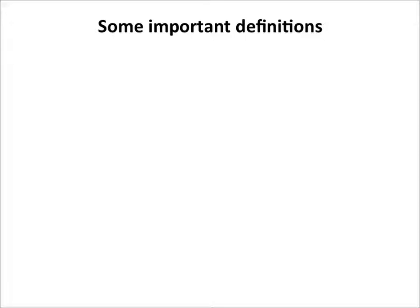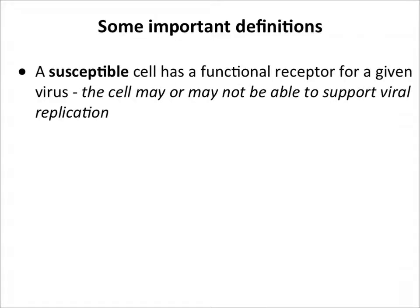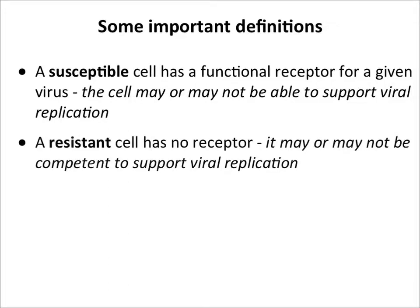There are some important definitions I'll be using throughout. A susceptible cell has a very specific meaning: it means the cell has a receptor that the virus can attach to and use to get into the cell. Other people use 'susceptible' loosely, but the correct meaning refers to the virus receptor.